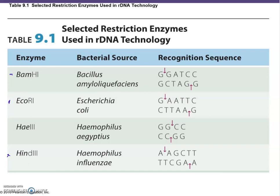Popular restriction enzymes include BamHI, EcoRI, and HindIII, which come from bacteria. The enzyme name is related to its bacterial source. BamHI comes from Bacillus amyloliquefaciens — 'B' from Bacillus, 'am' from the species. EcoRI comes from E. coli — 'E' from Escherichia, 'co' from coli, and 'R1' from restriction endonuclease number one.